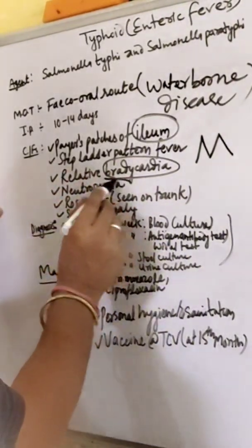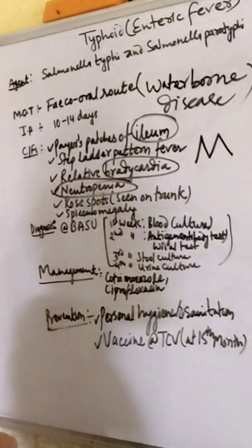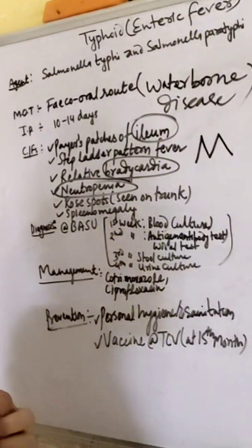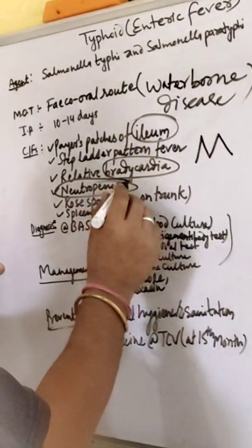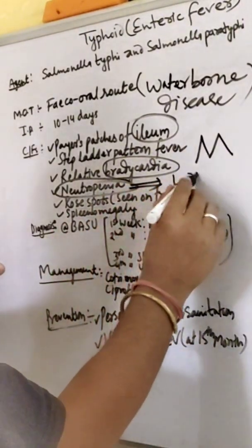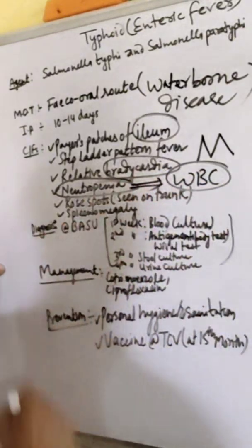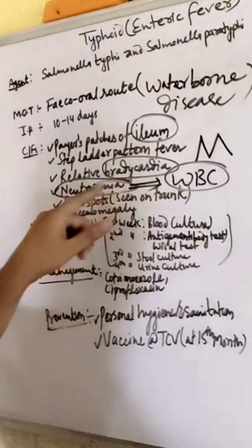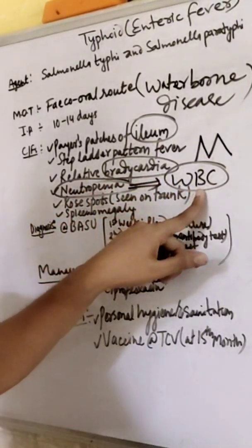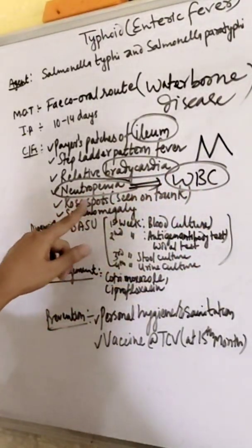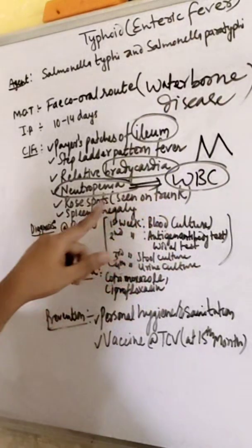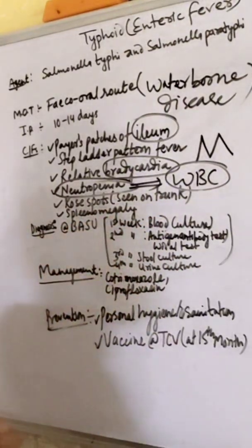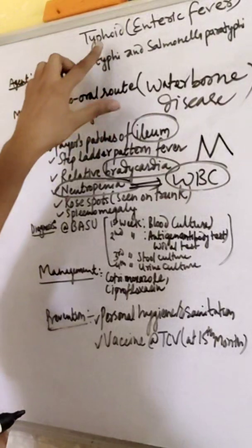Neutropenia - it is neutrophil deficiency or less count of neutrophils. Neutrophil is a WBC component. In the case of typhoid, neutrophil will decrease in number. Rose spots seen on trunk and splenomegaly.